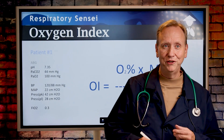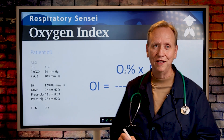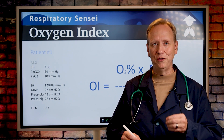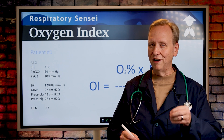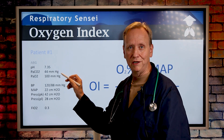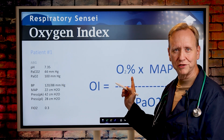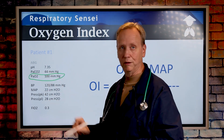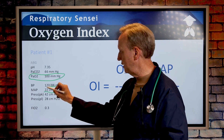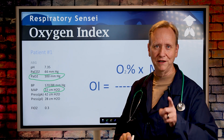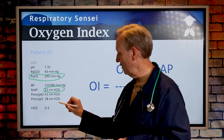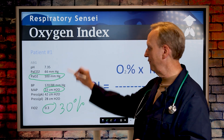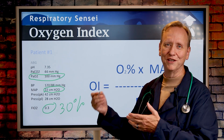Now let's look at a patient. On the NBRC exam, they'll give you many values in the question and your job is to identify those needed for the Oxygen Index. The formula requires O2%, mean airway pressure, and PaO2 — only those three things. For example, pH is listed but we don't need it. The PaO2 is 100, the mean airway pressure is 22, and the FiO2 is 0.30 — the same as saying 30%. Now we have all our numbers and can substitute them in to calculate the answer.